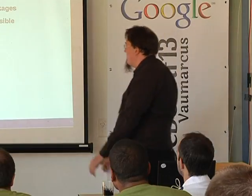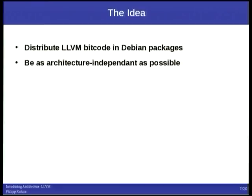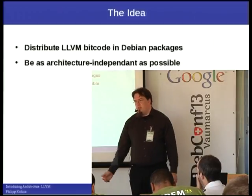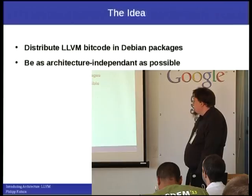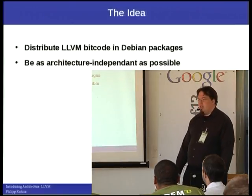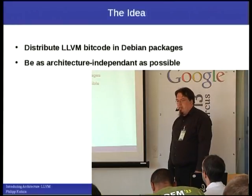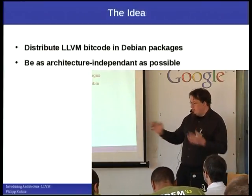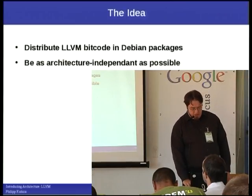What I want to do: I want to use the compiler toolchain, let it output LLVM bitcode, and ship these in Debian packages. We would have Debian packages for a new architecture that targets this abstract low-level virtual machine. Then we could do things with this on the target machine. LLVM bitcode in itself is not 100% architecture independent — I will come to that in a bit — but as far as possible I'd like to target a generic subset and be architecture independent.